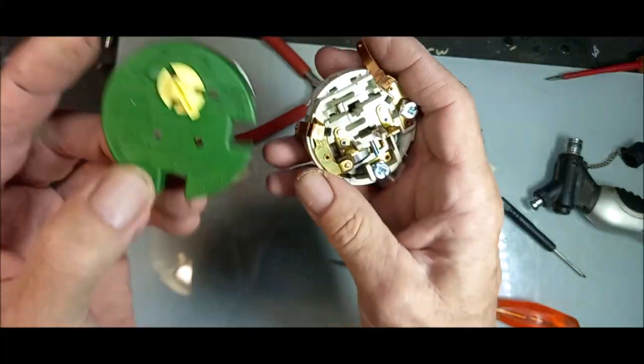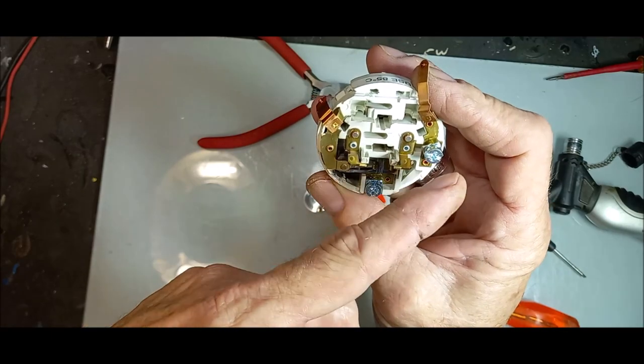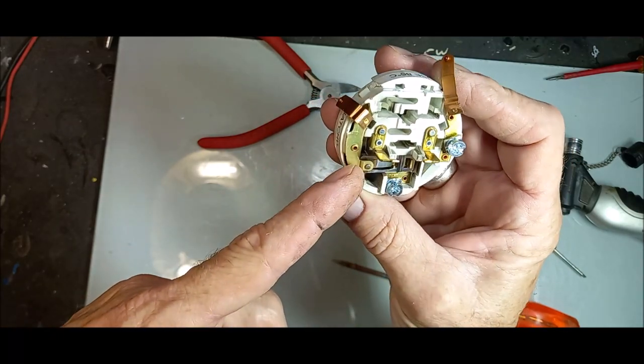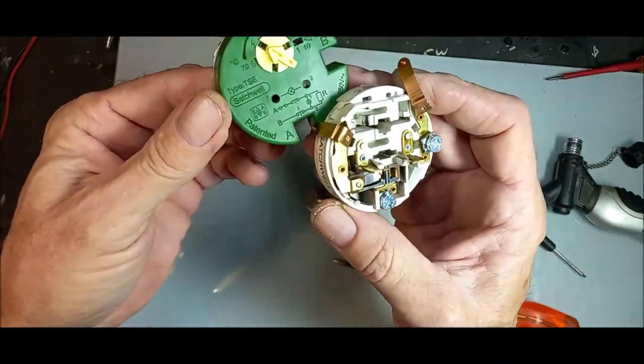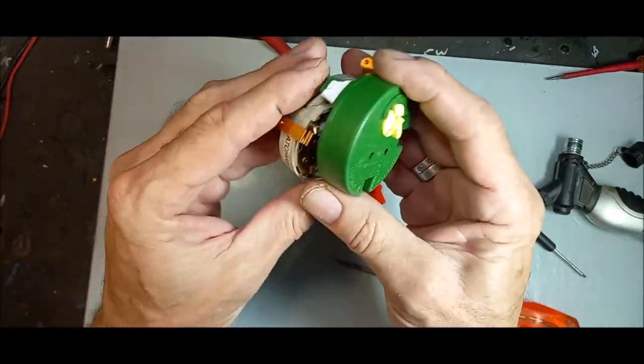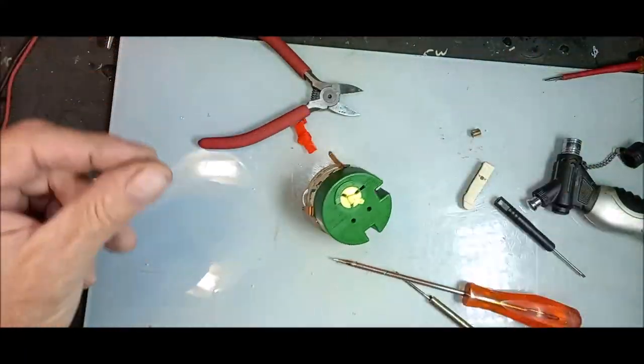You can just put your multimeter through here. You touch those two points, and then you can see if the supply goes to the geyser if you want to test it then. Okay, this is very interesting. Our geyser thermostat is working.